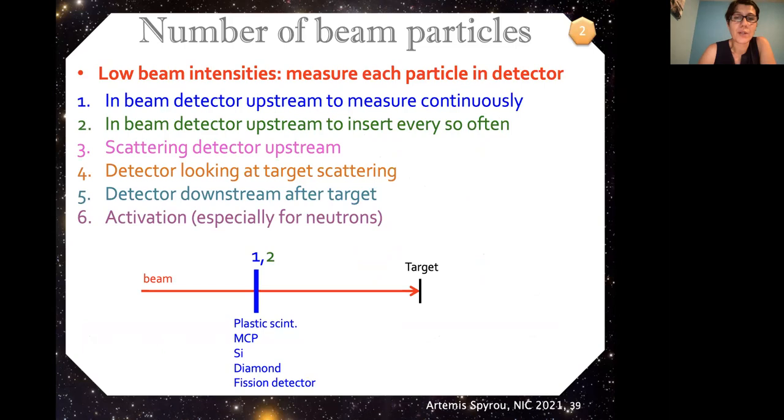If we have a low beam intensity, like with radioactive beams for example, then you kind of have to do these measurements with particle detectors. So one way is to have an in-beam detector upstream from your target, like here, and you can just measure continuously as long as this doesn't disrupt your beam. You could also, if this is going to hurt your beam or destroy your beam, then you can also just put this detector in every 10 minutes, 30 minutes, depending on how stable you think your beam is. And again, do these measurements every once in a while. And this could be many different kinds of detectors. It could be silicon, plastic scintillators, MCP detectors, diamond detectors, fission detectors. There are so many different types of detectors, and depending on the situation of the beam, you can choose.